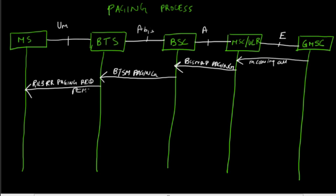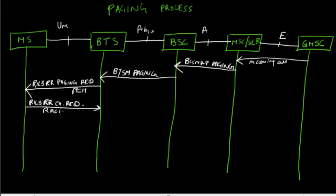The mobile listens to the paging channel, compares its TMSI, and wants to respond but does not have a channel to do so. So it sends a RIL3RR radio resource channel request message on the random access channel. The BTS then sends a BTSM channel required message to the BSC.